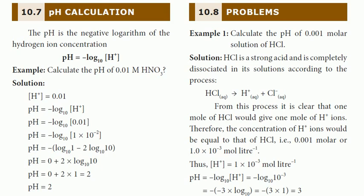So we will talk about pH calculation. pH is the negative logarithm of hydrogen ion concentration. Mathematically, pH is equal to minus log10 of the concentration of H+ ions.